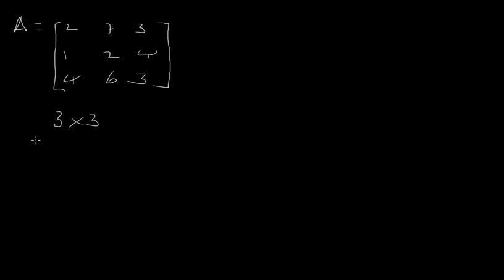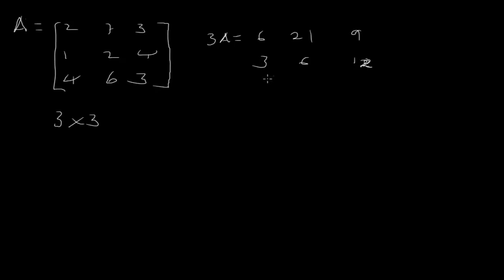For example, if we have the same matrix A and we're asked to calculate 3A, then 3A is simply 3 multiplied by each and every member of matrix A. So 3 times 2 gives 6, 3 times 7 gives 21, 3 times 3 gives 9, 3 times 1 gives 3, 3 times 2 gives 6, 3 times 4 gives 12, 3 times 6 gives 18, and 3 times 3 gives 9. So 3A equals that matrix, and this is where we ended in the previous tutorial.